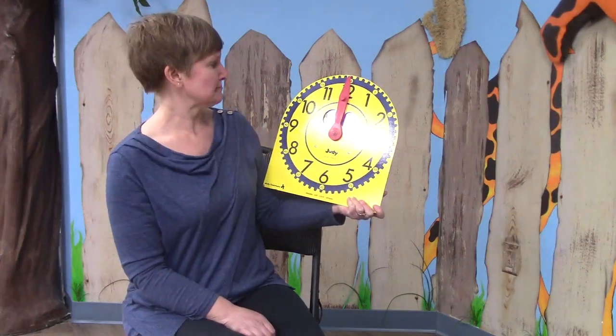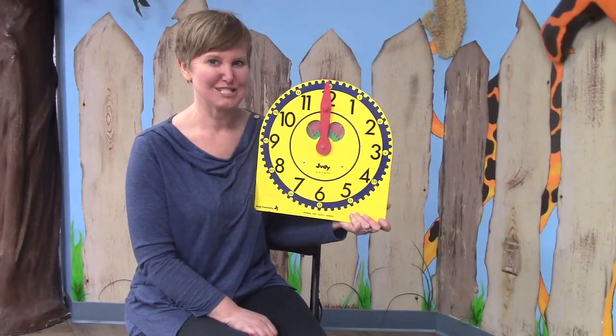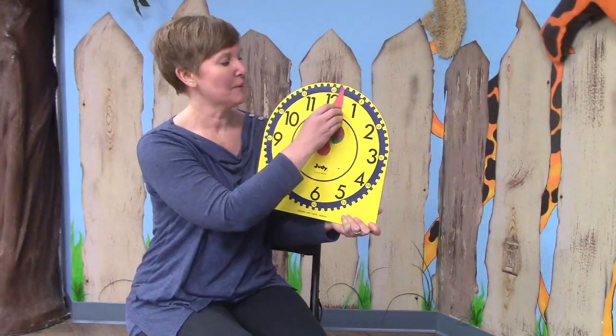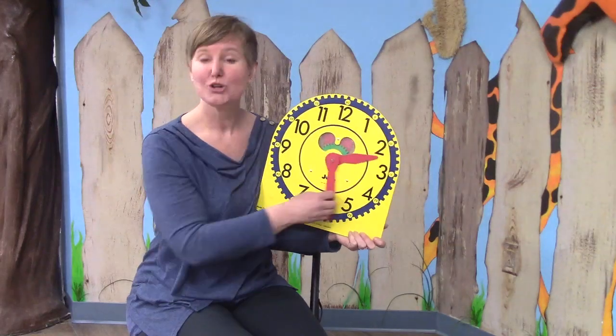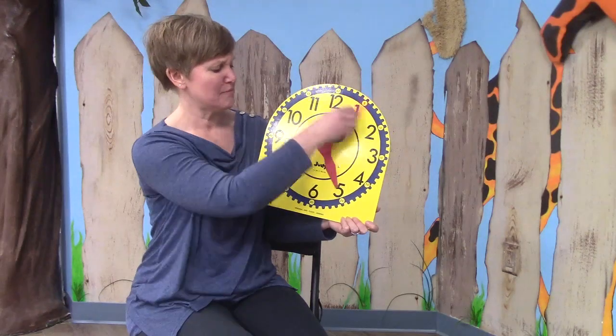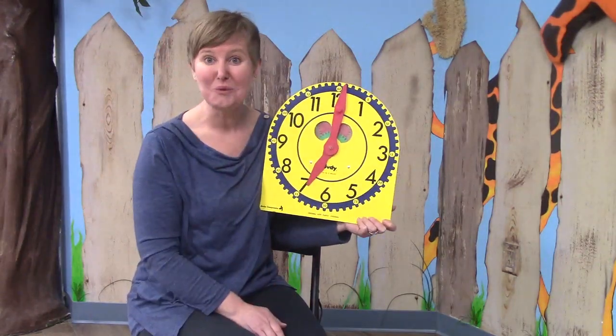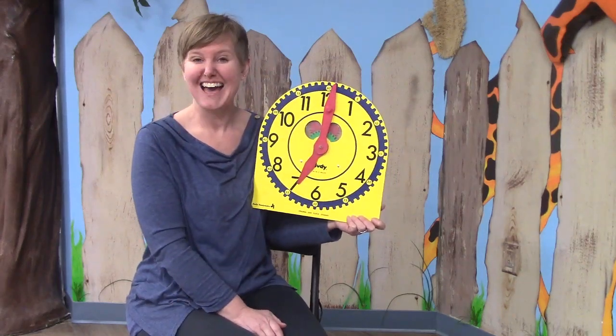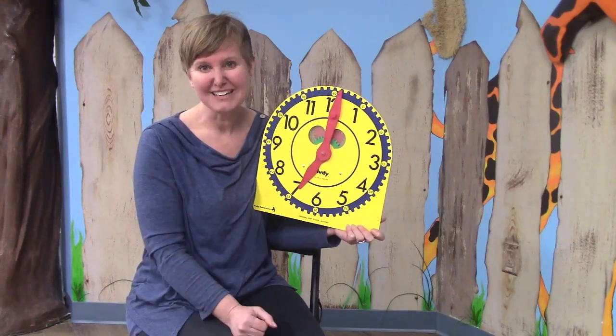Did you know that there are 24? Our clock only goes up to 12. So how would we have 24 hours in a day? That's because the hour hand goes around the clock twice every day. That's why you could maybe get up at seven o'clock in the morning. And maybe your bedtime is seven o'clock at night. There's two seven o'clocks. One in the morning and one at night.